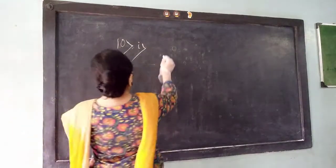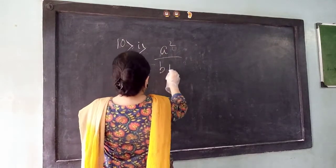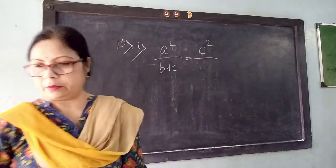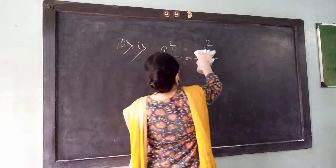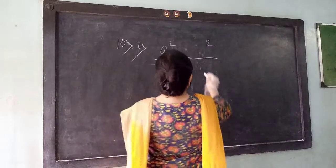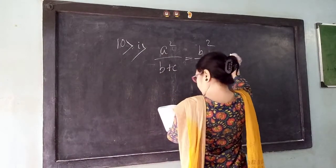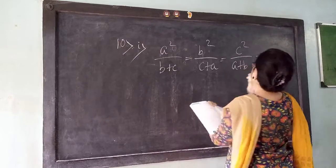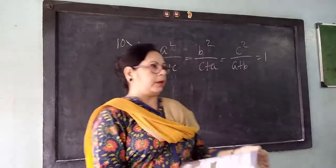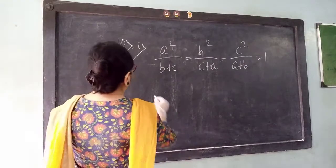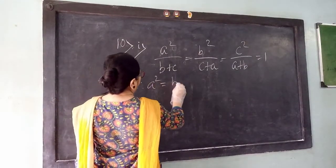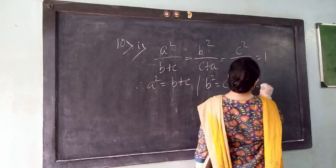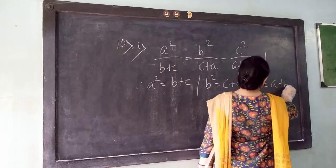Given: A squared by B plus C equals B squared by C plus A equals C squared by A plus B equals 1. From here, what we can write: A squared equals B plus C, B squared equals C plus A, C squared equals A plus B.